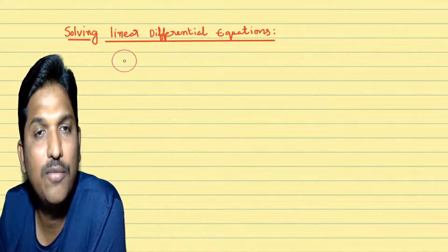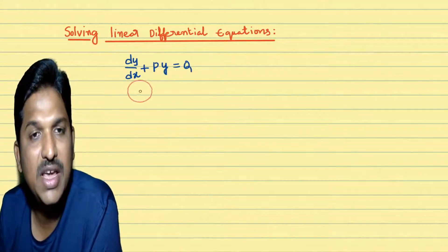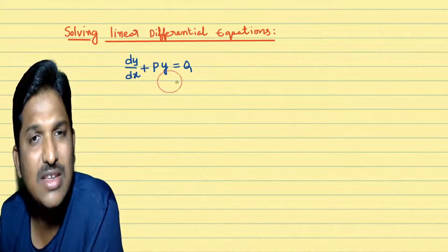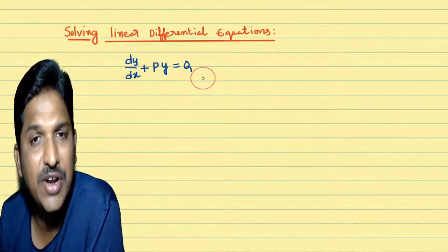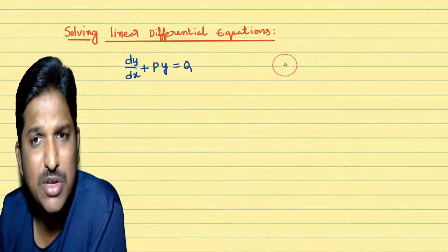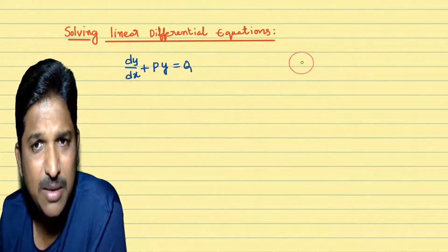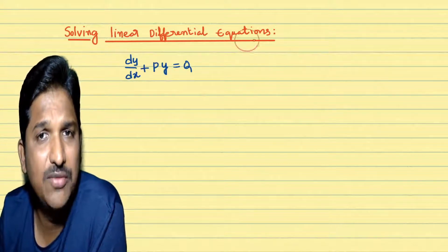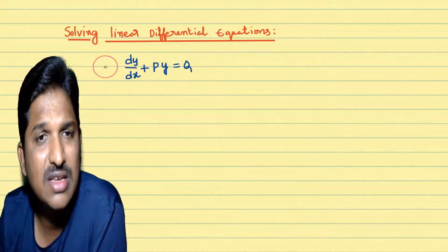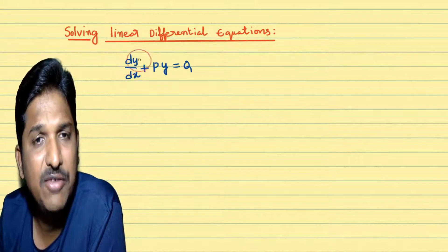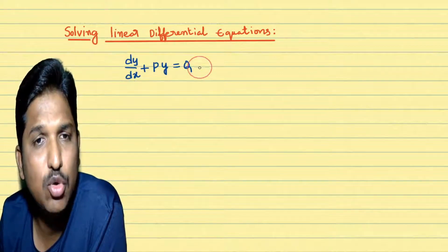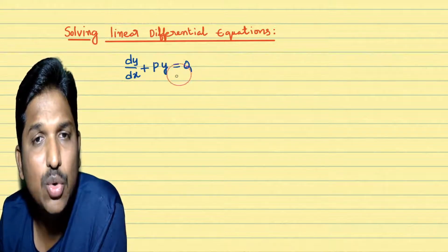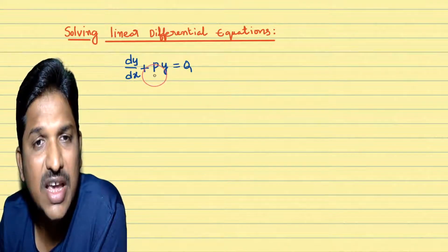A differential equation of the form dy by dx plus py equal to q is called a linear differential equation. Another form is also there: dx by dy plus px equal to q. Two types of linear differential equations are there. In the first type, dy by dx plus py equal to q — here, what are p and q? p and q are either constants or functions in x.